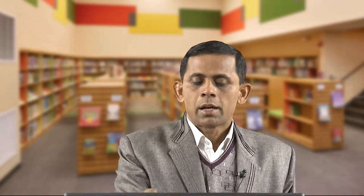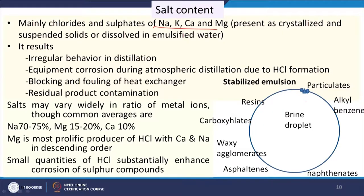Salt content is also one parameter of crude oil. When crude oil is taken out from underground, it contains different types of material including water and salt. These salts are basically sodium, potassium, calcium, and magnesium chloride. Salt can be present as a crystalline solid or may be dissolved in water, which can form an emulsion with the organic phase in the crude oil. The brine droplet stability is maintained by a layer of resins, asphaltenes, waxy agglomerates, carboxylates, naphthenates, and alkyl benzene.